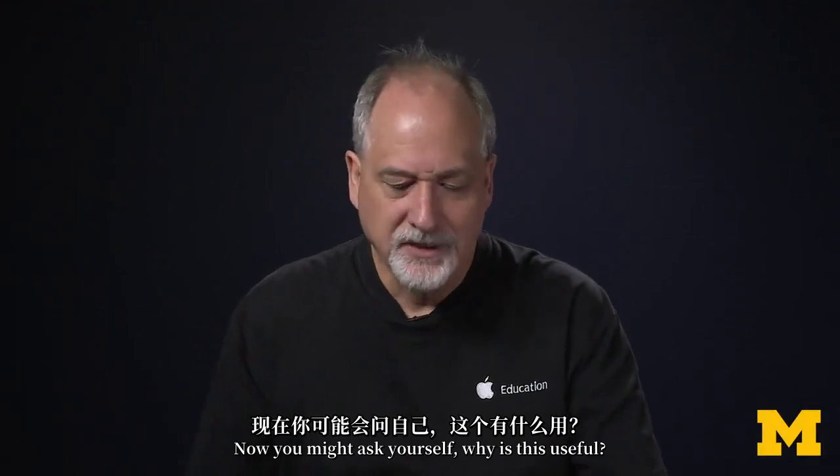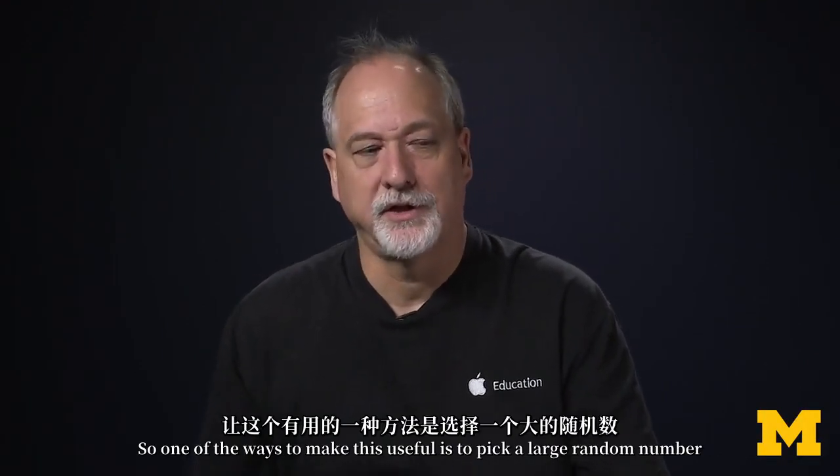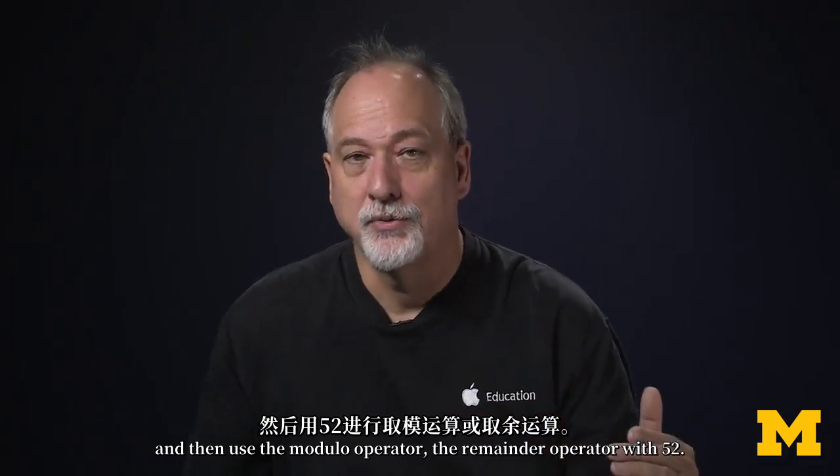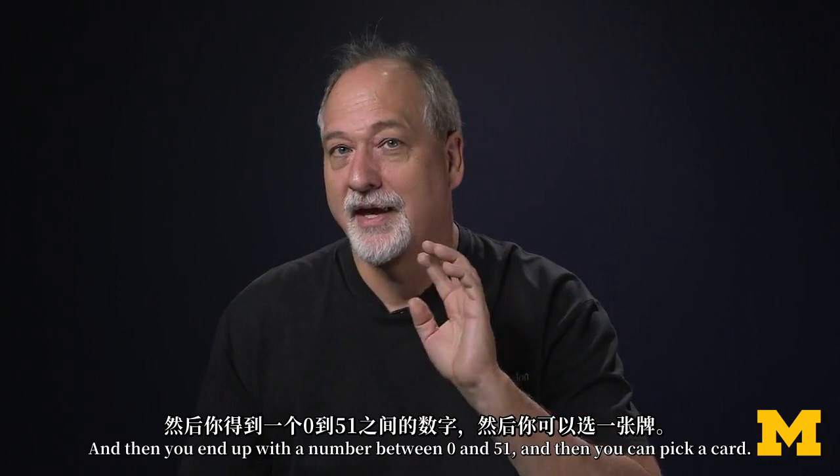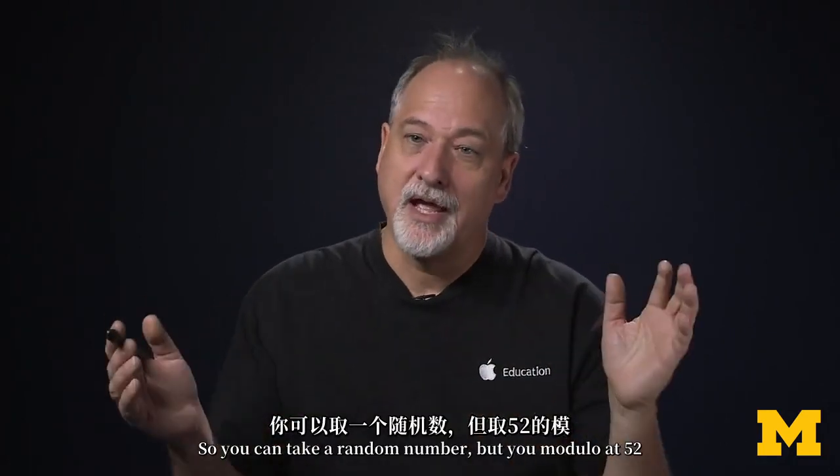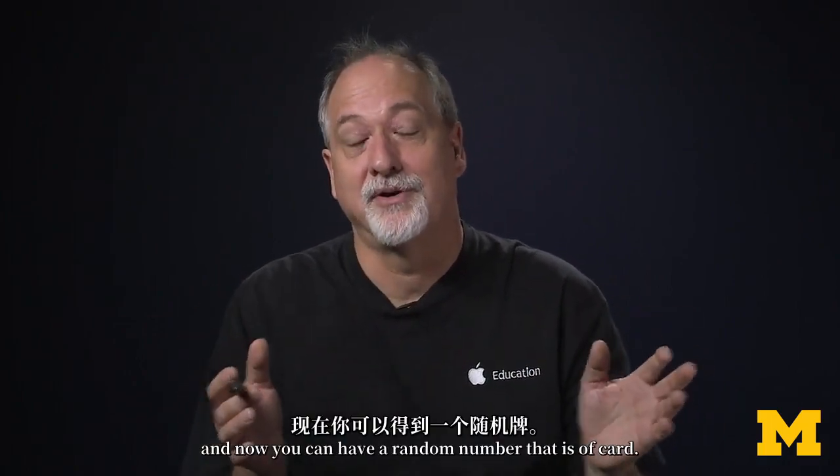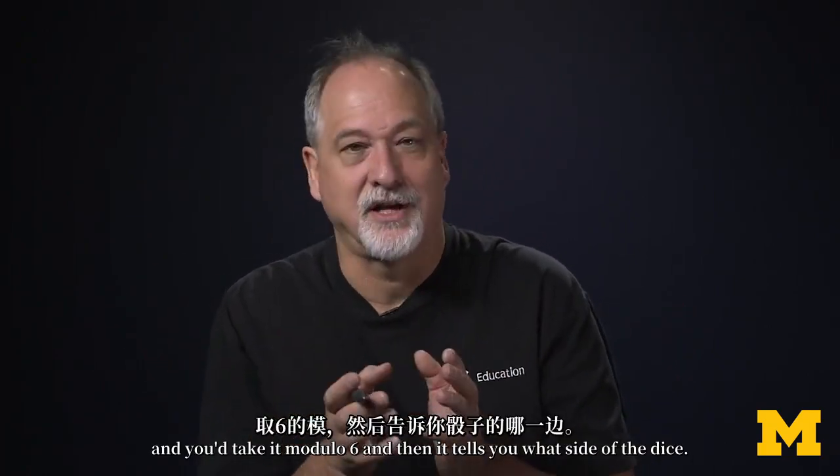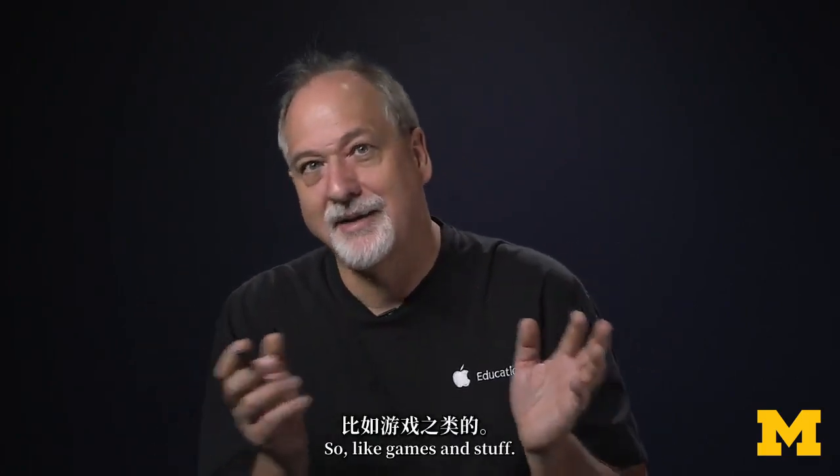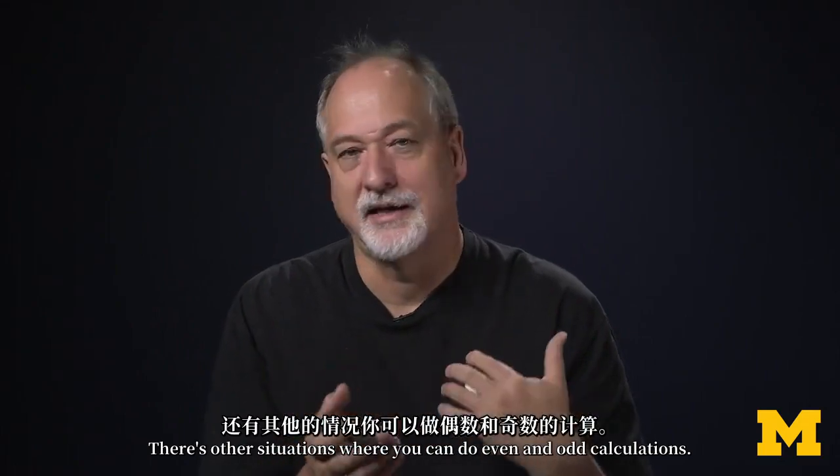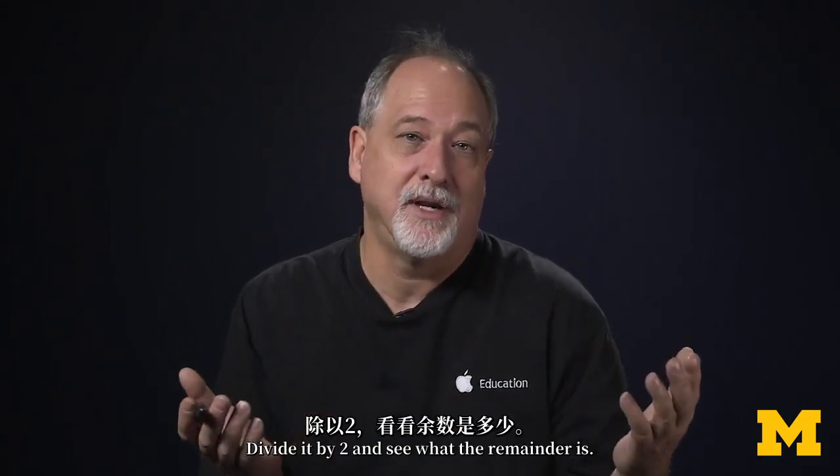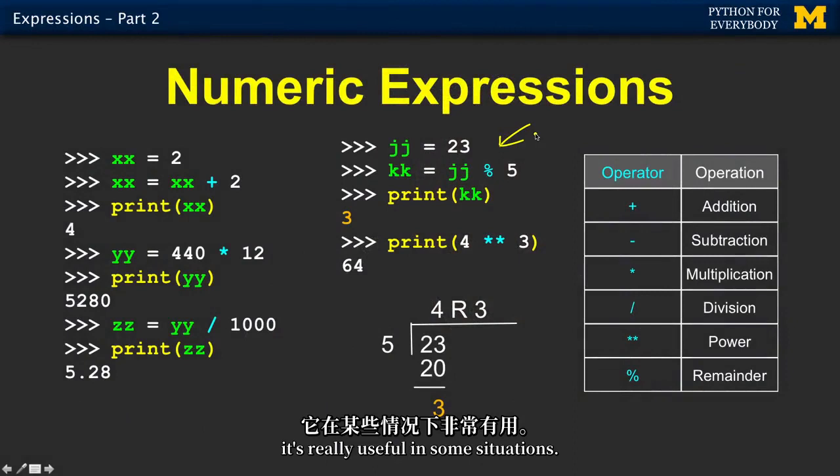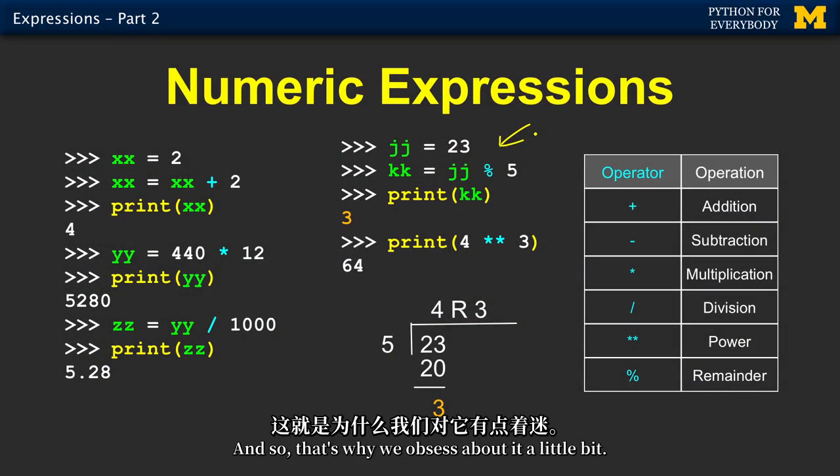Now you might ask yourself, why is this useful? So one of the ways to make this useful is to pick a large random number and then use the modulo operator, the remainder operator, with 52, and then you end up with a number between 0 and 51, and then you can pick a card. Or if you want to roll a dice, you make a big random number and you take it modulo 6. So like games and stuff, there's other situations where you can do even and odd calculations. And so this whole notion of the modulo operator, it's really useful in some situations.